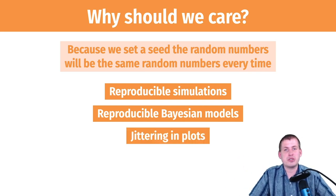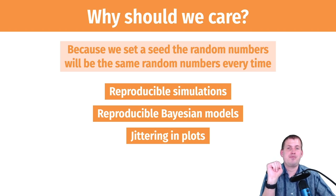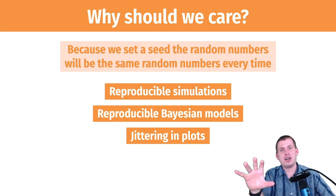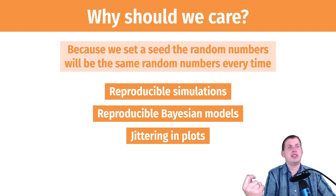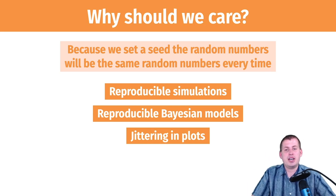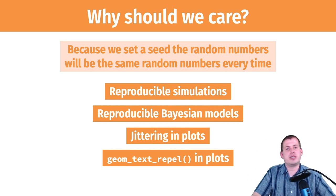In data visualization, jittering uses randomness to move dots around. If you jitter points and they look great, the next time you create that plot the dots will be in completely different places. This is especially problematic if you're refining a graphic in Illustrator — you generate the plot, edit it, then regenerate and everything moves. If you set a seed before jittering, the jitter will look identical every time. The same applies to geom_text_repel, which also uses randomness to place labels.